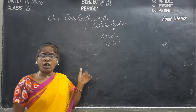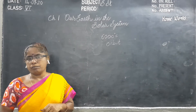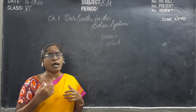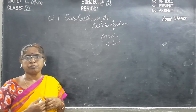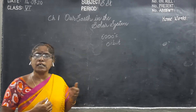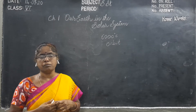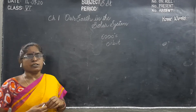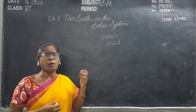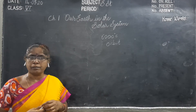Our Earth — there are 8 planets, and we will learn about our Earth. Our Earth is one of the planets where life exists. It is the third planet from the sun. And it is also the fifth largest planet in the solar system. On this Earth we observe major components.